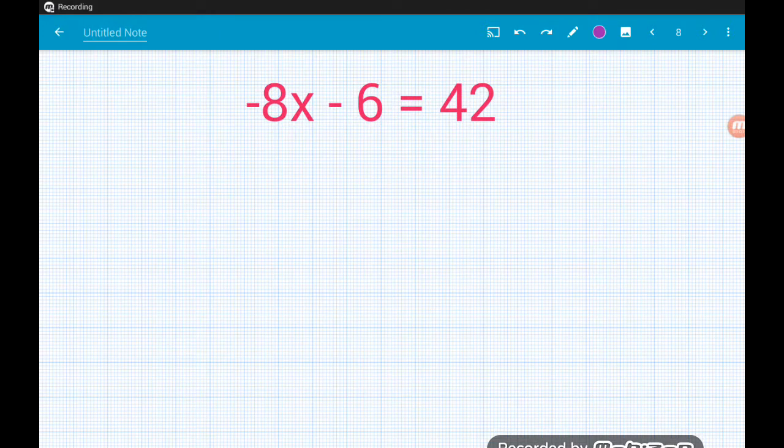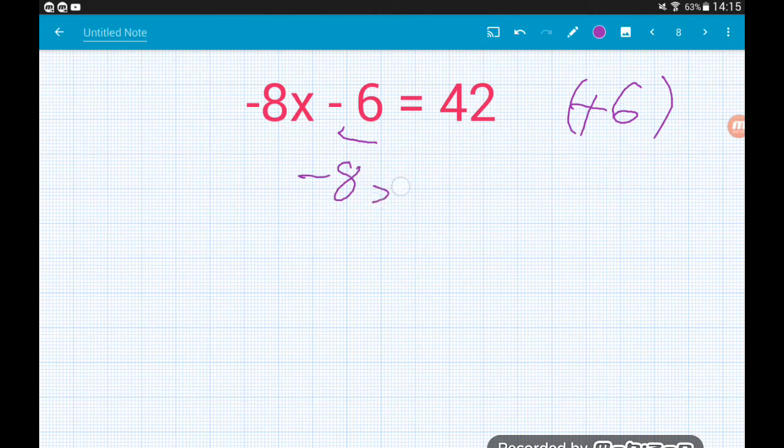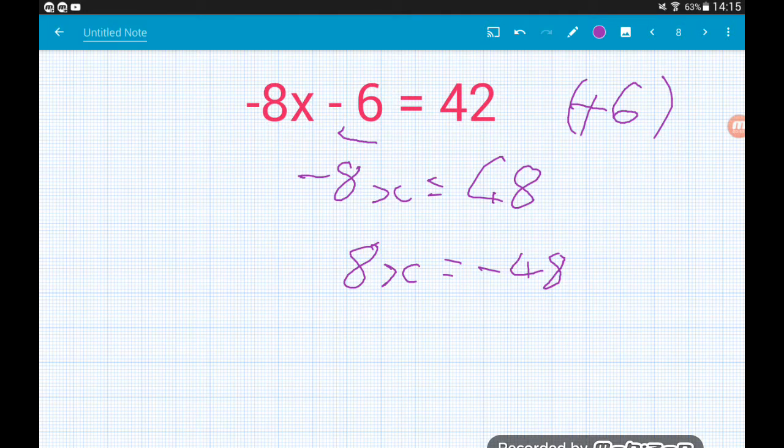This one might be looking quite unfriendly because of all the negative signs. But let's just play it as we've played it so far. Minus 8x minus 6 equals 42. Add 6 and that leaves us with minus 8x equals 48. Now because we've got minus x equals positive 48, a minus sign can swap sides. So we can happily here write 8x equals minus 48. We're either multiplying or dividing both sides by minus 1. Just think of it as a cheeky little trick.